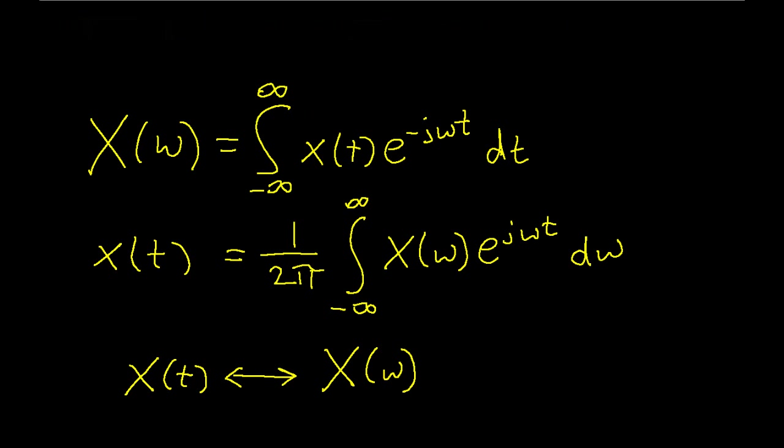You'll notice I've already put on the screen the definitions associated with the Fourier transform. This first line is the Fourier transform. It takes a signal x(t), which is a time domain signal, and converts it into X(ω), which is the Fourier transform of this time domain signal.